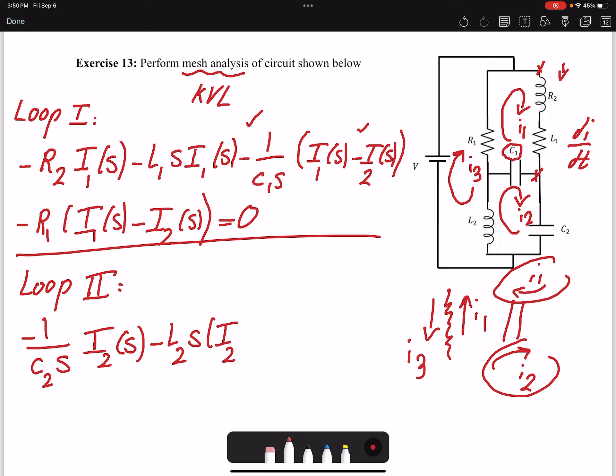I can write I2(s) minus I3(s), and then I have my capacitor C1, so I2 minus I1 this time. So I'll write it here: minus 1 over C2s— I'm sorry, I have C1 here.